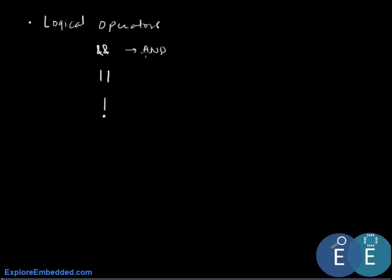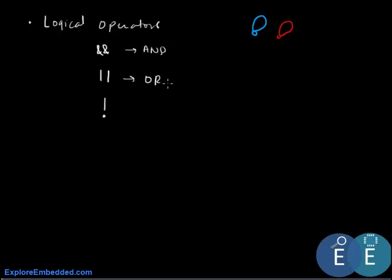For example, say we have two balloons — a blue one and a red one. For an AND operation, the condition is true only if both the blue and the red balloon are present. For OR, the condition is true if either a blue balloon or a red balloon is present. NOT is the simple inversion operator which turns 0 into 1 and 1 into 0.